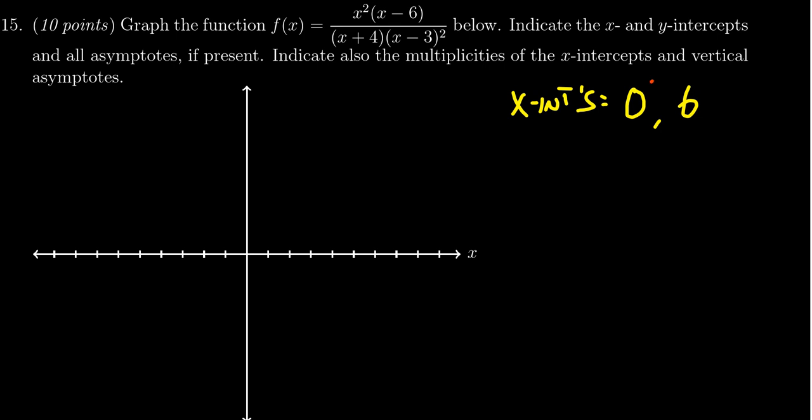So notice that 0 has an even multiplicity and 6 has an odd multiplicity. This tells us that at 0, we will touch the x-axis but not cross. At 6, we will cross the x-axis.